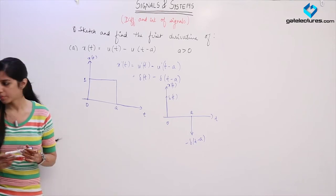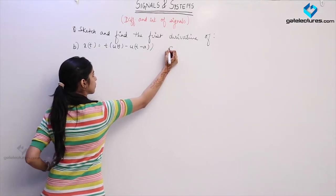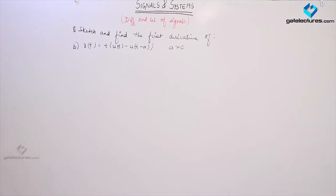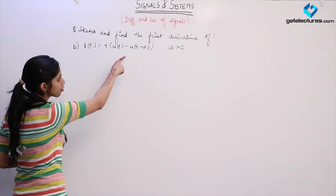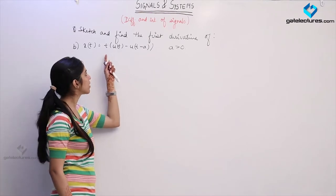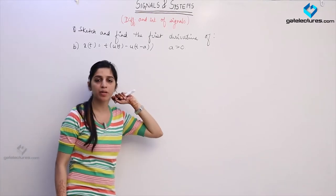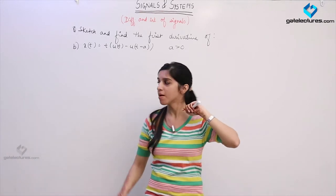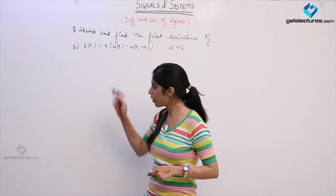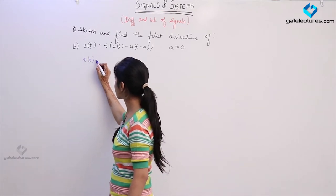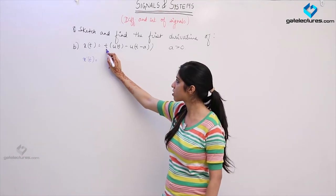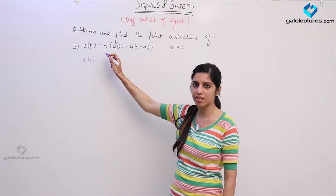Now looking at the next part: this is similar to the first part except that we multiplied t with this pulse. We had a pulse occurring between 0 and a, now we have multiplied t. So this pulse is going to become a saw tooth pulse, because we are multiplying the value with t. We are going to differentiate it mathematically first.